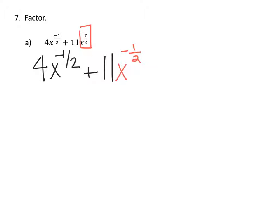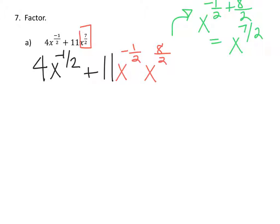So if I include x to the 8 over 2, I need to make sure this is still equivalent to x to the seven-halves. Since I have the same base, I add the exponents: negative one-half plus eight-halves gives me seven-halves. So I've written x to the 7 over 2 as a product that includes x to the negative one-half.